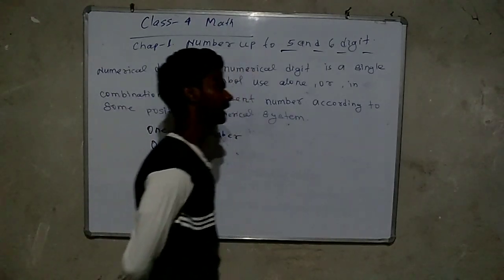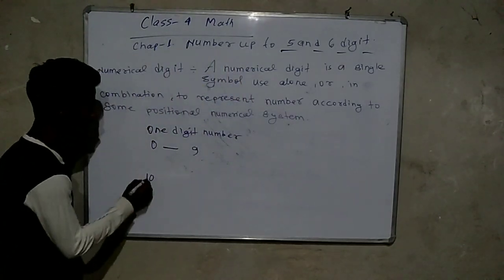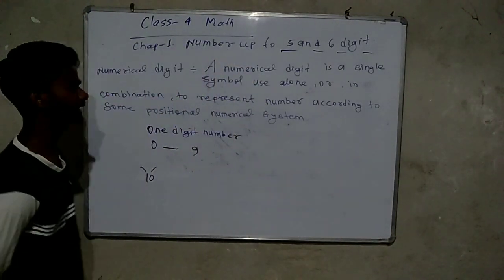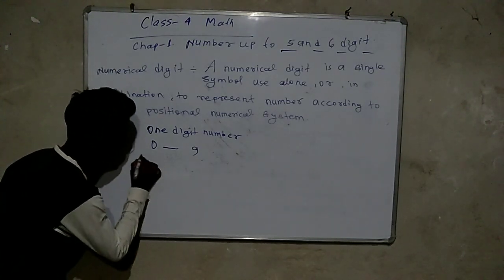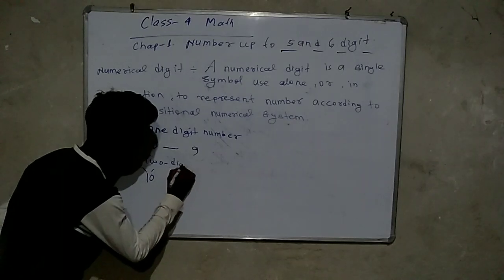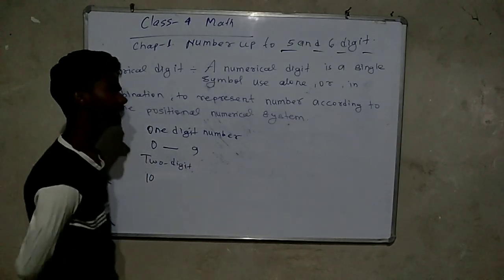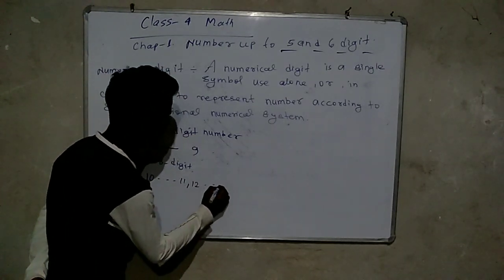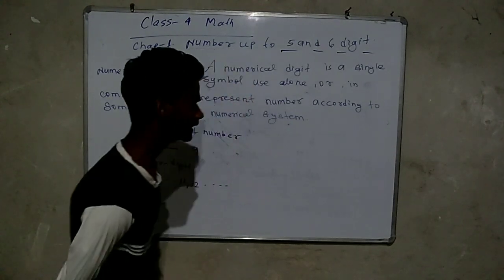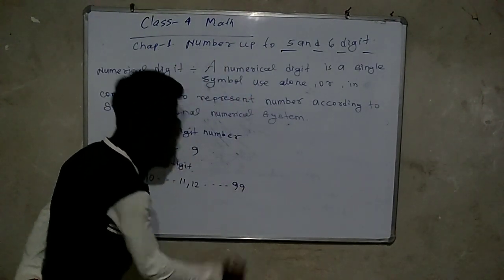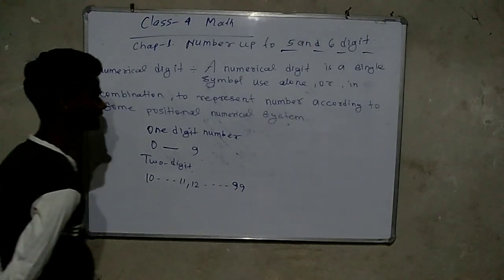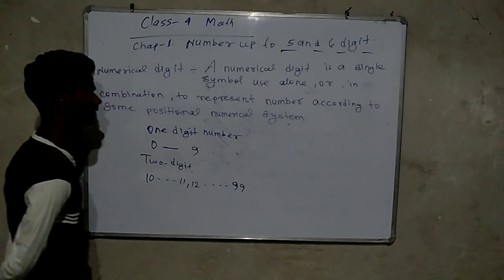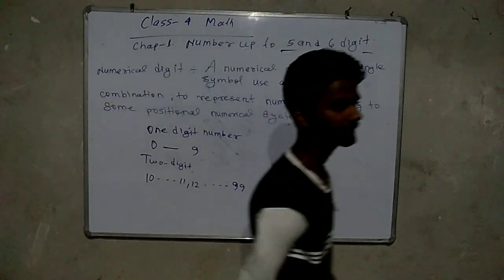The number 10 is shown — which is a 2-digit number. So a 2-digit number starts from 10, then 11, 12... up to 99. The 2-digit number range is 10 to 99.